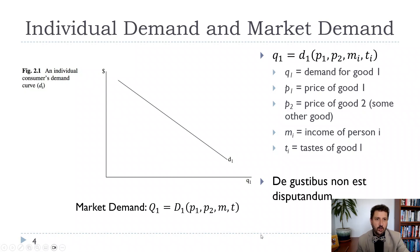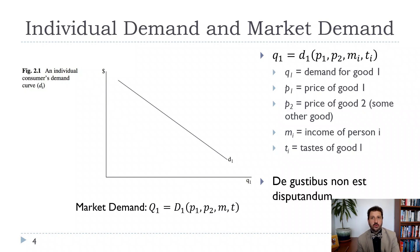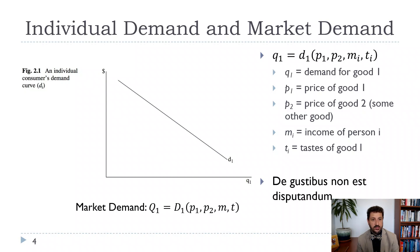So we start with a fairly standard market demand curve. We've got price on the vertical axis and quantity on the horizontal axis. Quantity demanded is going to depend on the price of good one — the one we're talking about — the price of good two, some other good. So if we're thinking about the demand for Coke, we need to think about the price of Pepsi. If we're thinking about the demand for Volkswagens, we need to think about the price of Toyotas.